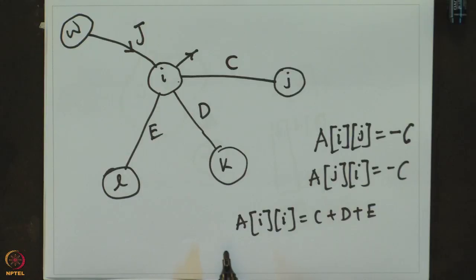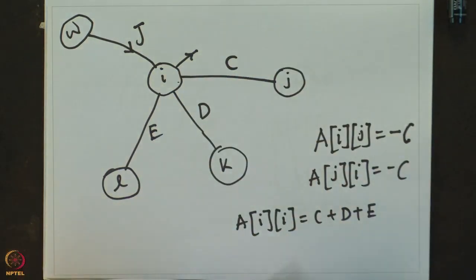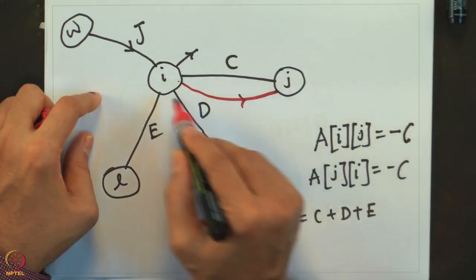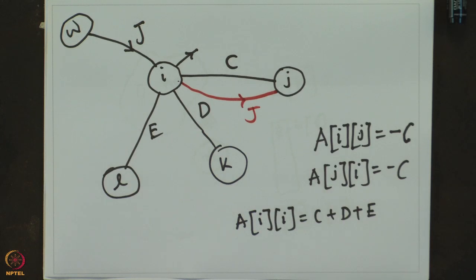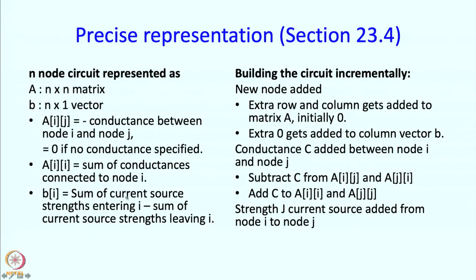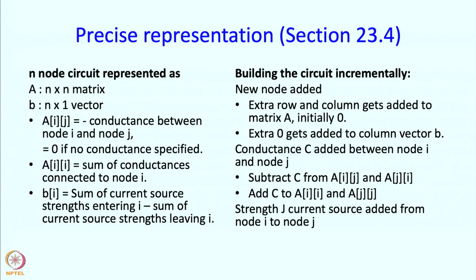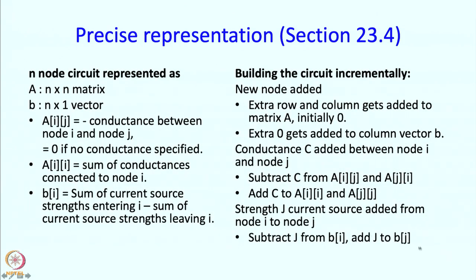If I add a current source going from node i to node j with strength J, B[i] should contain currents entering i — but this current is leaving i, so I subtract J from B[i]. This current J is entering node j, so I add J to B[j]. That is exactly how the circuit gets built up.